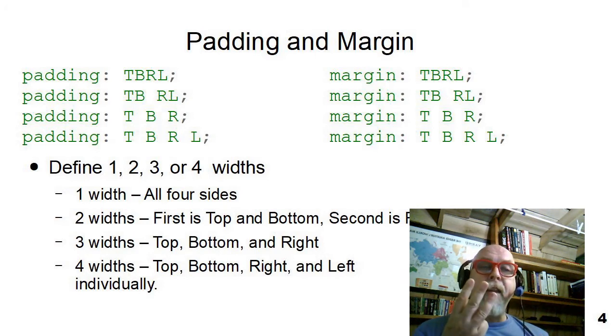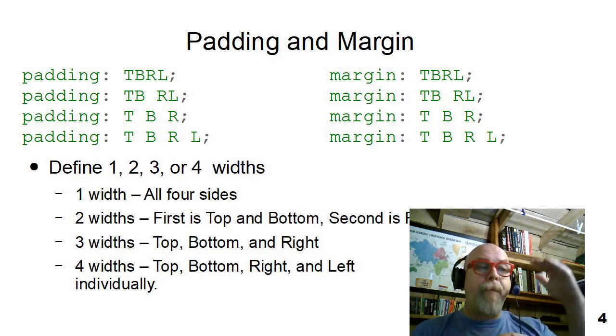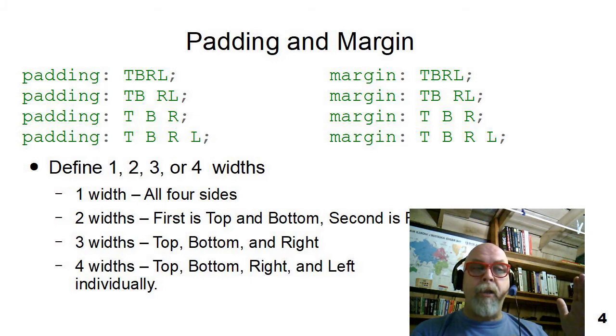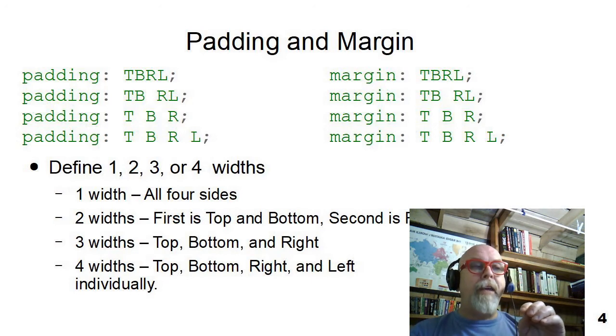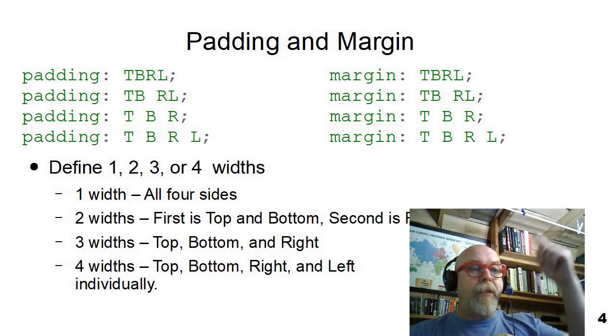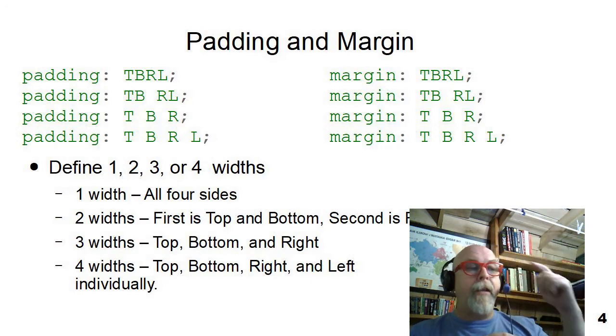If you specify three values, which is something you don't see people do very often, but you can, it sets the top, bottom, and right padding or margin. And if you specify four values, you set the first value is top, bottom, right, and left. So, you can define the dimensions and the widths of all of the margin and padding and get it exactly wrapped up the way you want it in the right box.